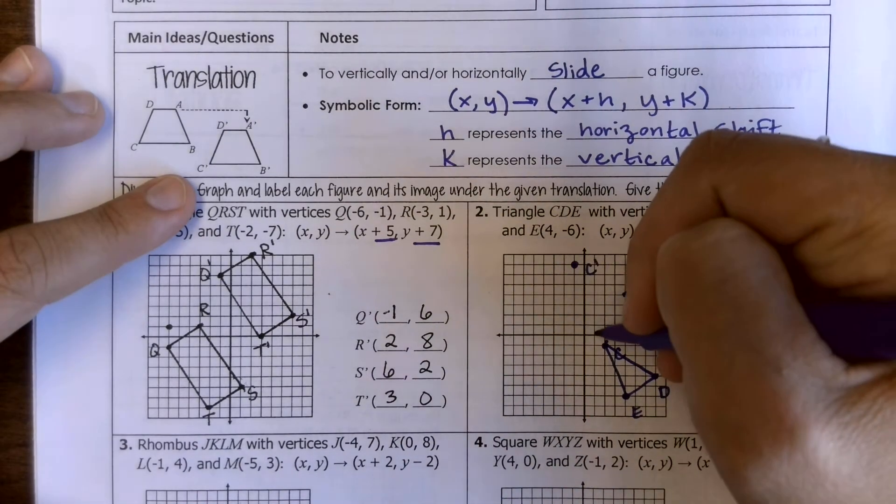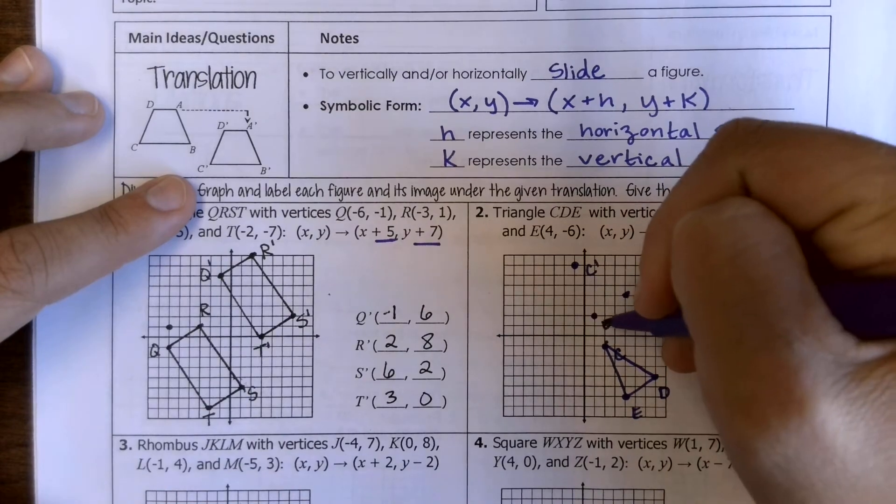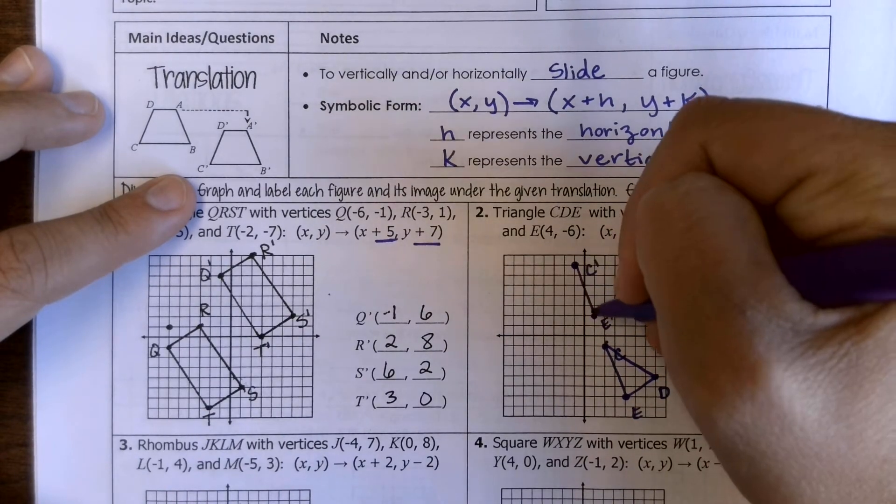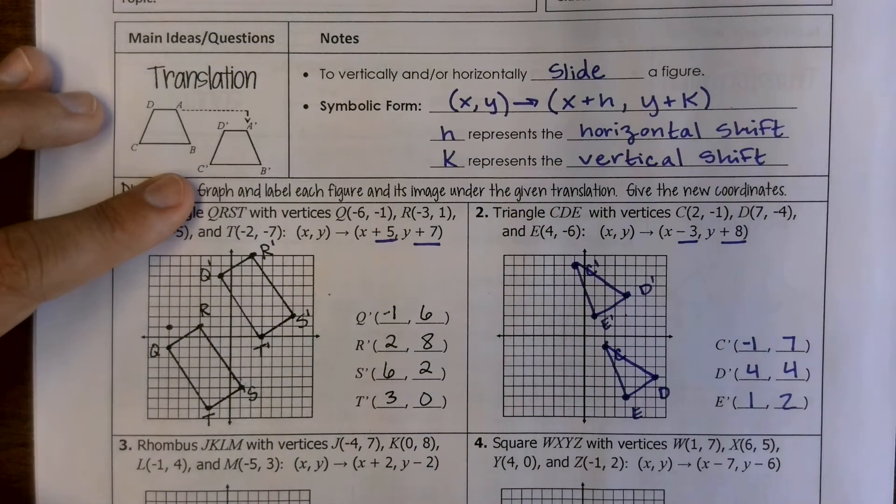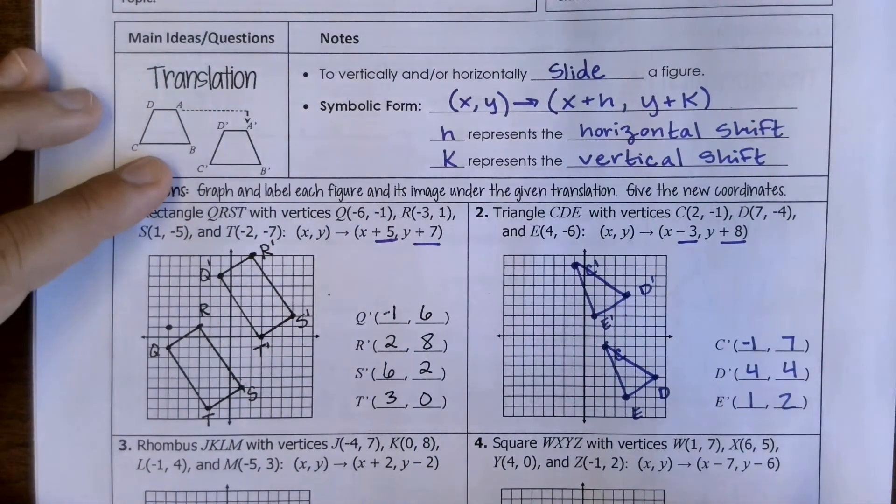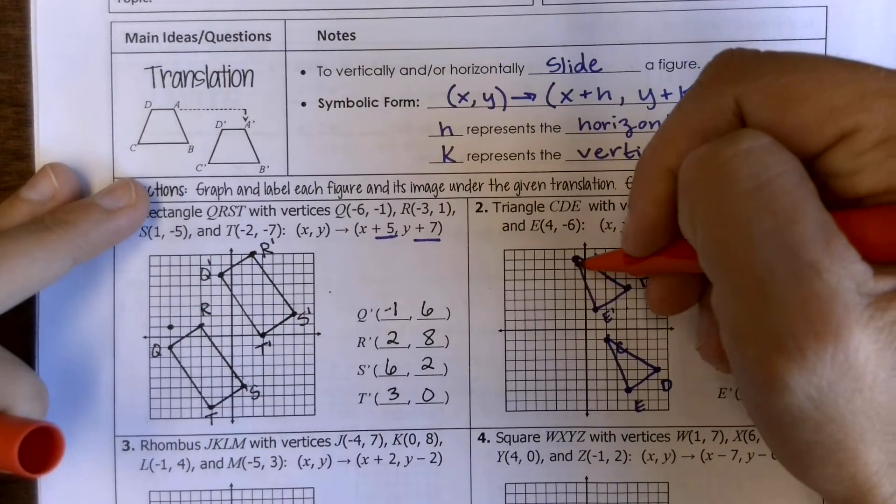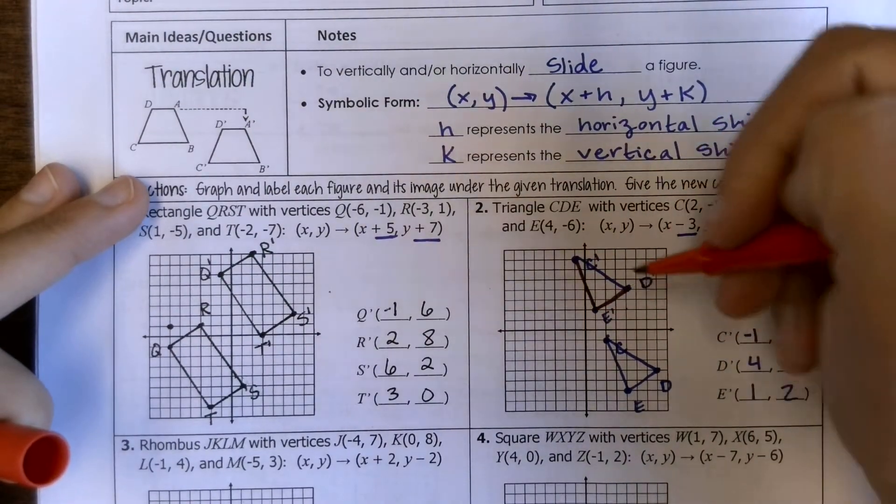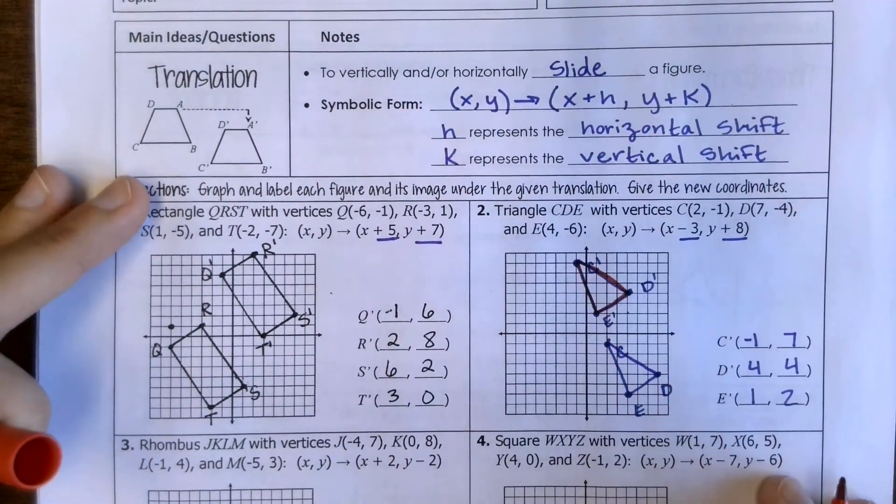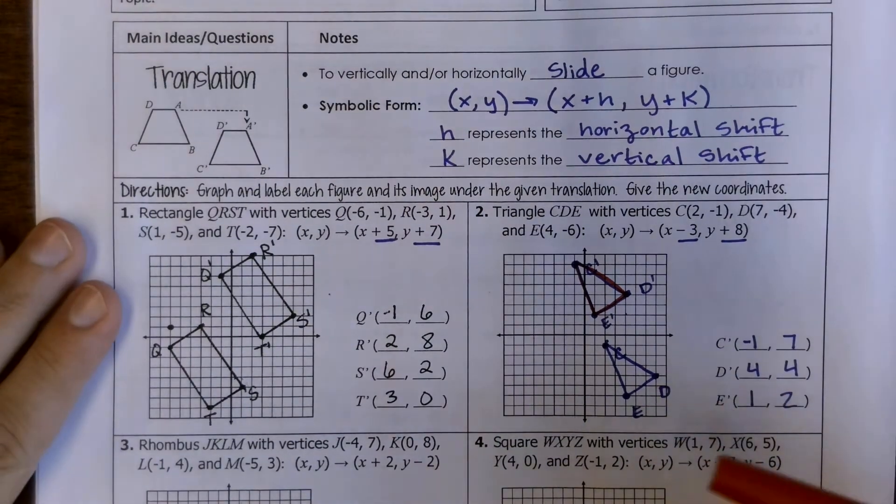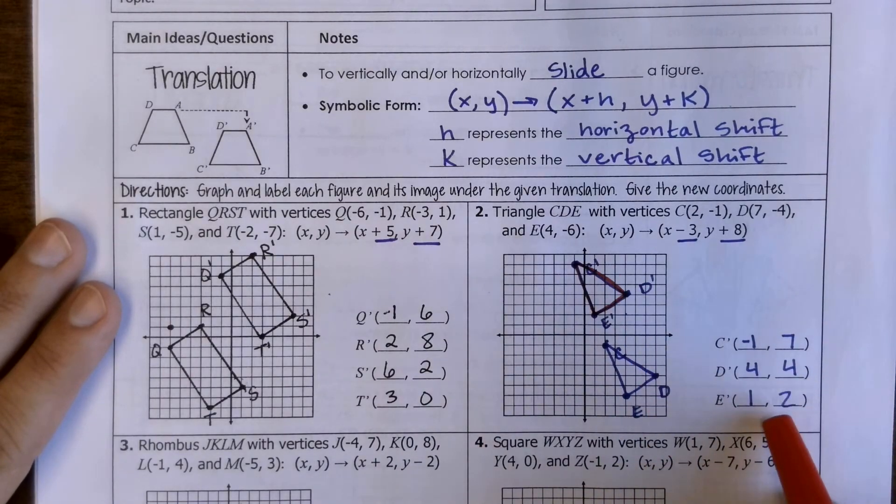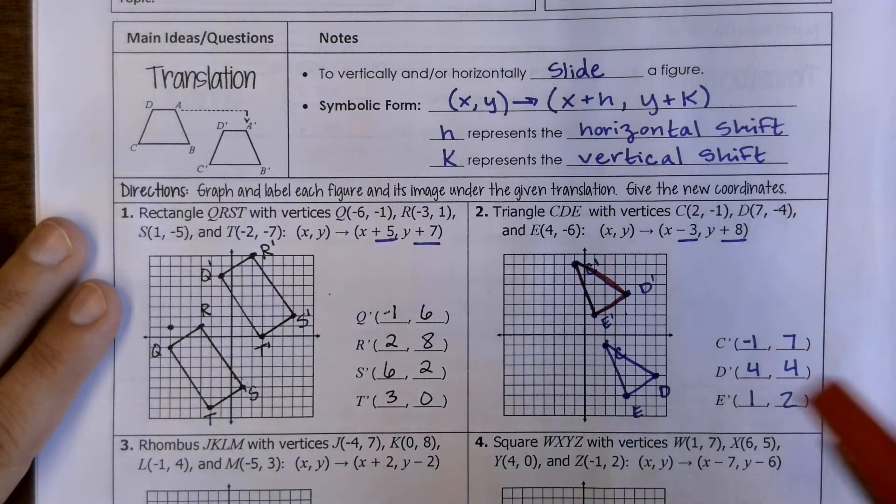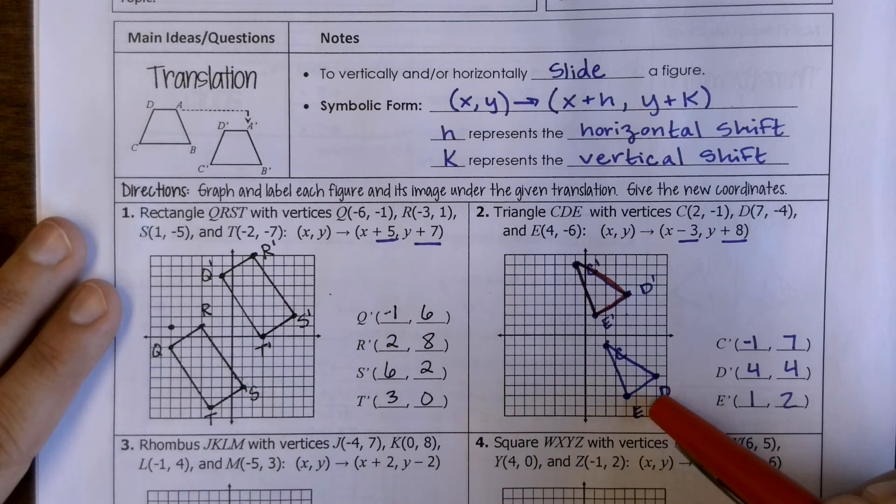And then E prime is at 1, 2. So again, I could take every single point and go to the left 3 and up 8, to the left 3 and up 8. But just as easy to do it with arithmetic and then make sure that my shape looks exactly the same.